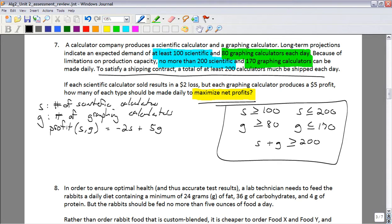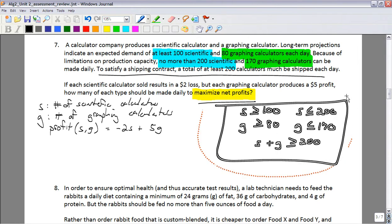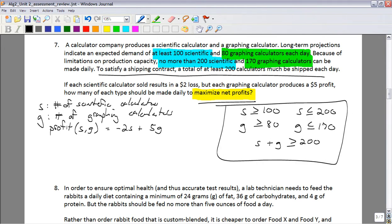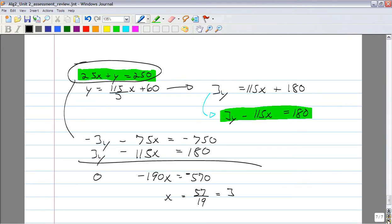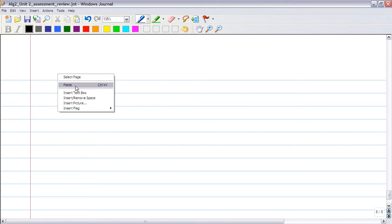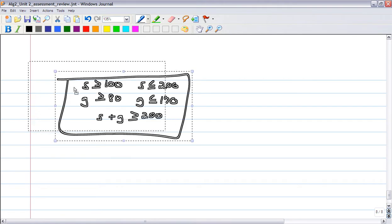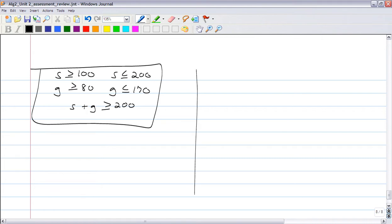So we're trying to maximize profit. These are our constraints. We're going to use those to produce a graph, and that graph is going to show us the different combinations of scientific and graphing calculators that may maximize profit. And then we'll just have to take that region, look at all of the boundary points, and run them through our profit. So, that was a lot of talking there. We need to know what a graph of these constraints looks like, though.